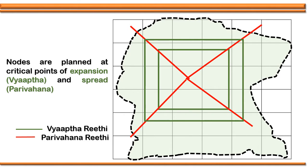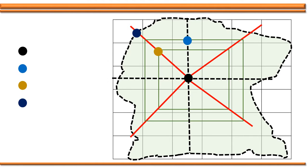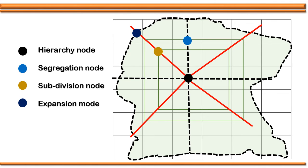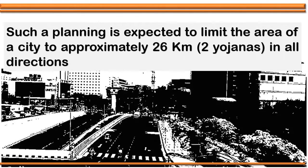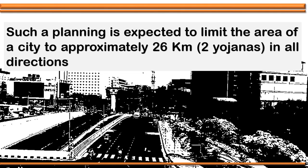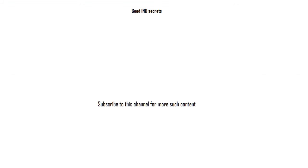These nodes are planned as critical points of expansion and spread — Vyaptaka and Parivahana. As we can see in this figure, the nodes are planned with hierarchy, segregation, subdivision, and expansion. Each node has four different activities, scoring a total of 16 activities possible in a city, like meeting, buying, living, and entertainment. Such planning is expected to limit the area of a city to only 26 kilometers. Interesting, isn't it?